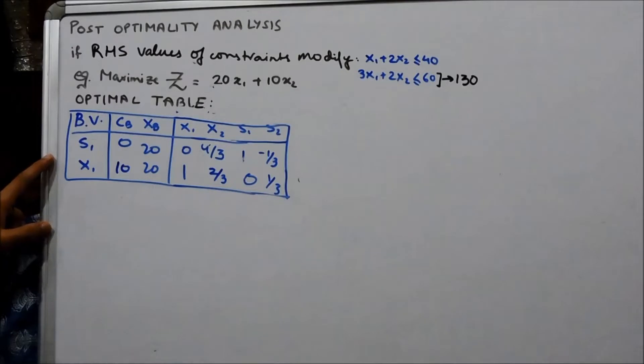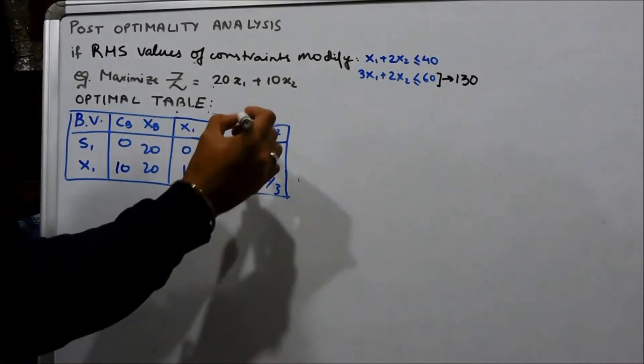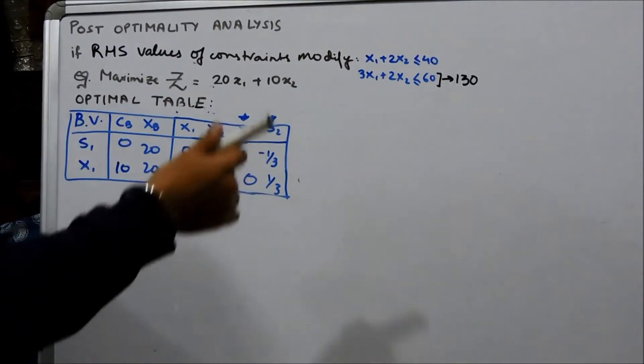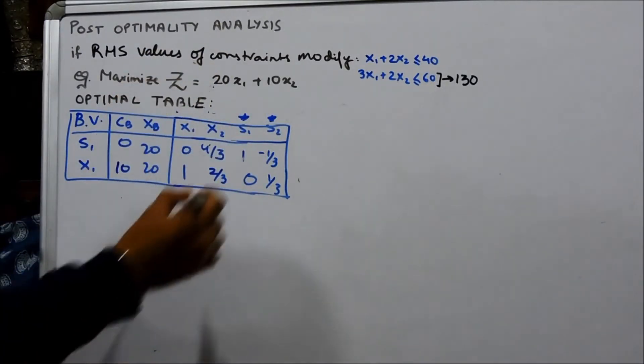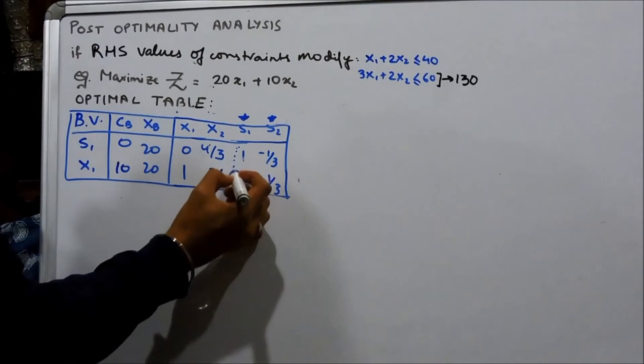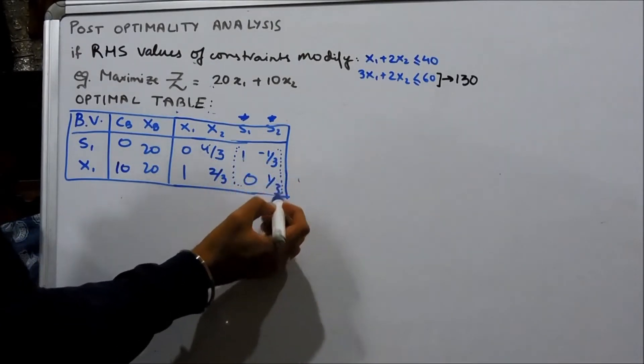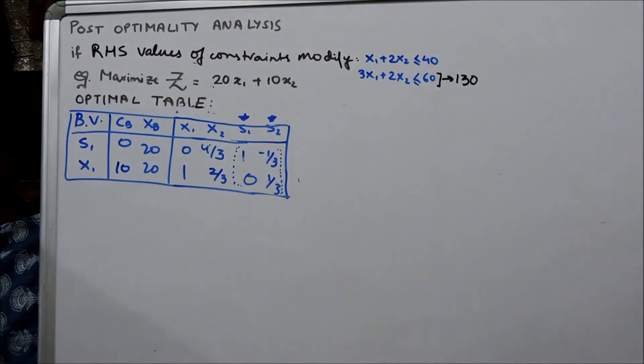What we are going to do is look at something which is called an optimal inverse. Because these two S1 and S2 are slack variables, this part or this matrix is called the optimal inverse.